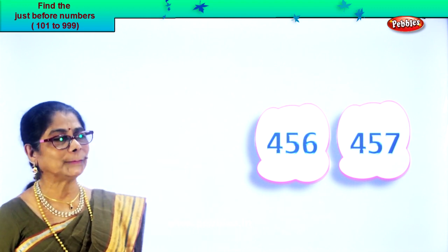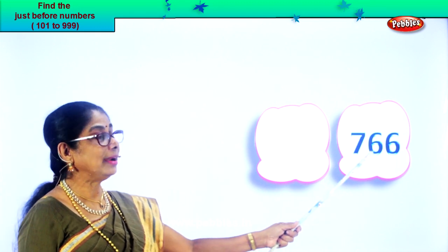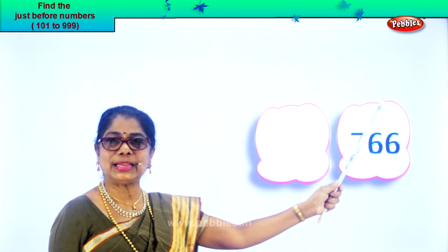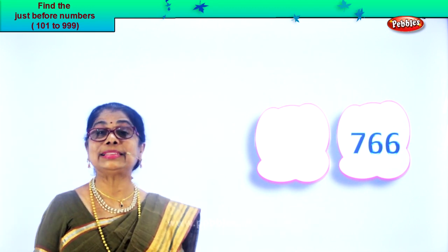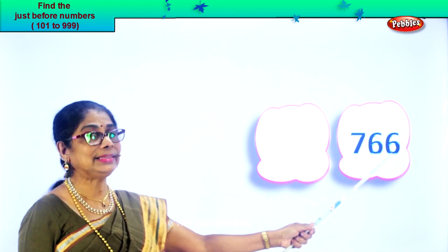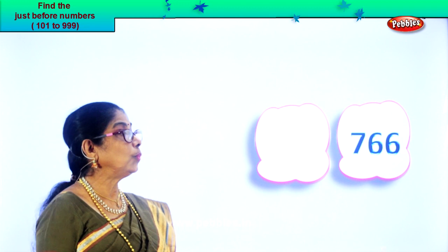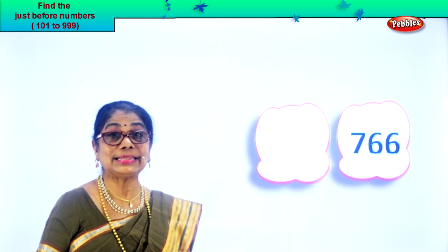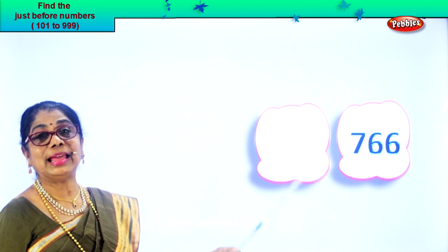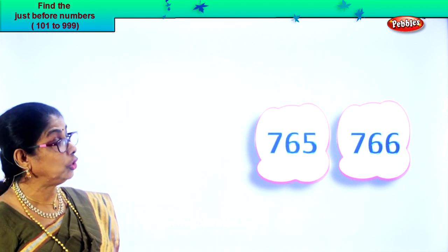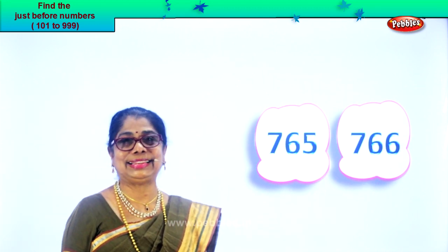Let's go on to another number. Look what you have — seven hundred and sixty-six. In the ones place you have six, tens place six, and in the hundreds place seven. Read: seven hundred and sixty-six. What is one less than six? Five. What is one less than sixty-six? Sixty-five. So your number before is seven hundred and sixty-five. Seven hundred and sixty-five, seven hundred and sixty-six.